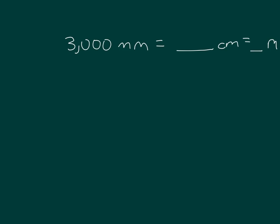In this case, going from millimeters to centimeters, we divide by 10. So that's 3,000 divided by 10, which is equal to 300, which we can write as 3 times 10 squared.